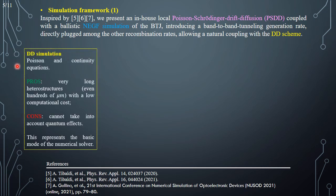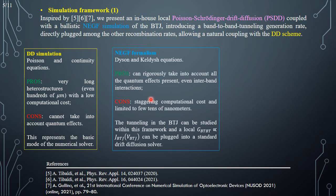The drift-diffusion simulation is based on Poisson and continuity equations, can manage long heterostructures with low computational cost. However, it cannot take into account quantum phenomena — this represents the basic mode of the numerical solver. On the other hand, the NEGF formalism is based on Dyson and Keldysh equations, can take into account quantum phenomena including inter-band interactions, but has a staggering computational cost and can only be used for a few tens of nanometers. Therefore, it is applied to the study of the buried tunnel junction alone, from which a local band-to-band tunneling generation rate — proportional to the tunneling current depending on the voltage drop across the junction — is plugged into a standard drift-diffusion solver alongside the other standard recombination rates.